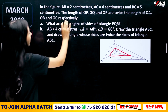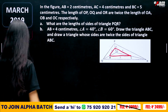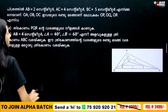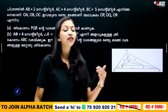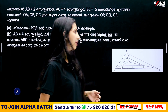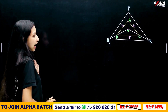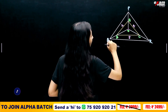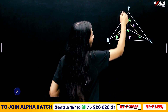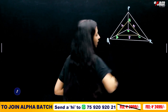What are the lengths of the sides of triangle PQR? This triangle PQR has sides PQ, PR, and QR.